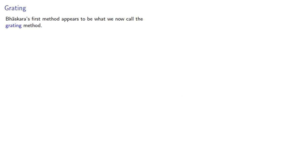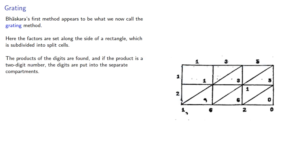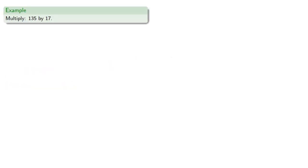Bhaskara's first method appears to be what we now call the grating method. Here, the factors are set along the sides of a rectangle, which is subdivided into split cells. The products of the digits are found, and if the product is a two-digit number, the digits are put into the separate compartments. Then the diagonals are added.